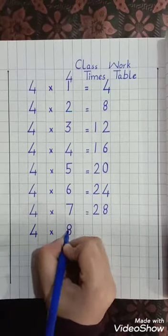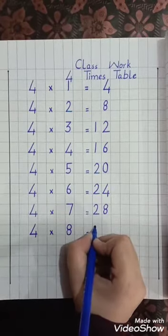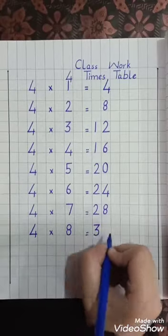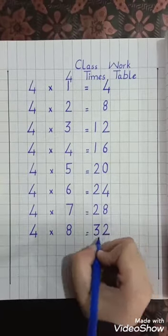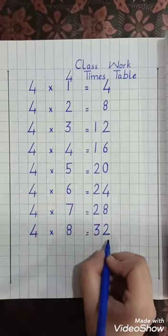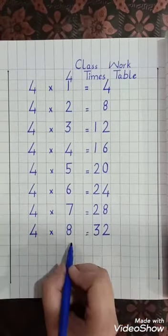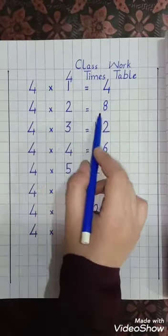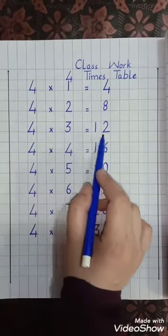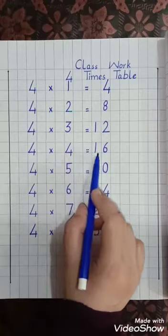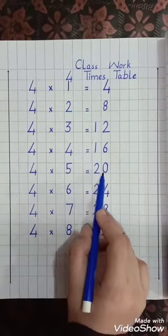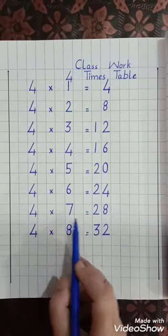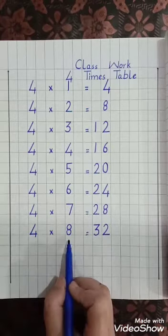Four, multiply, eight, equal lines — 32. Four eights are 32. Four eights are 32. Four ones are 4, four twos are 8, four threes are 12, four fours are 16, four fives are 20, four sixes are 24, four sevens are 28, four eights are 32.